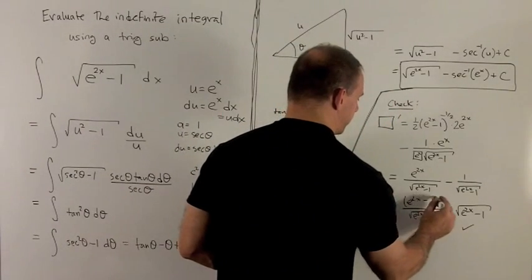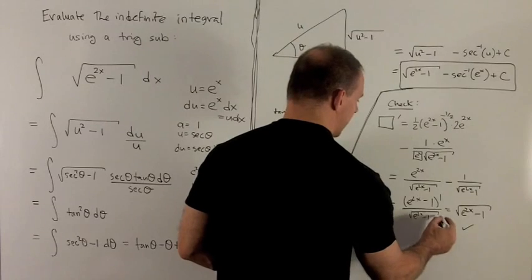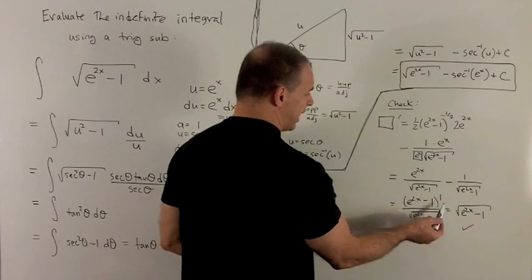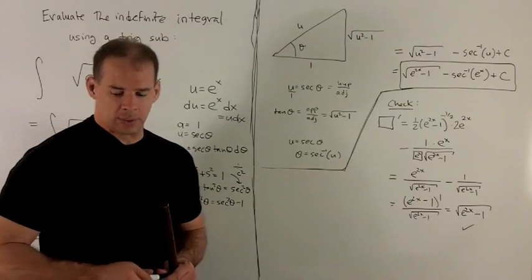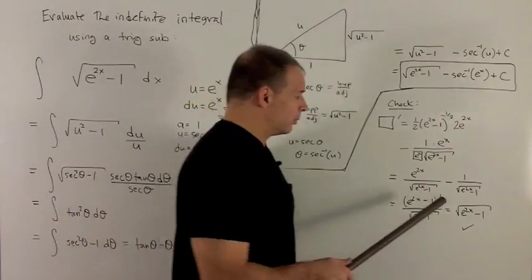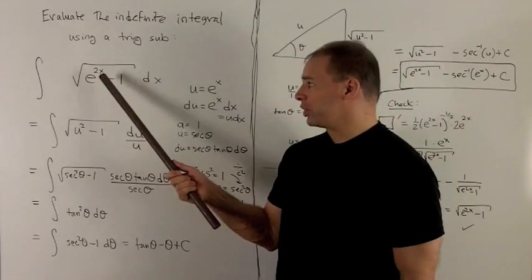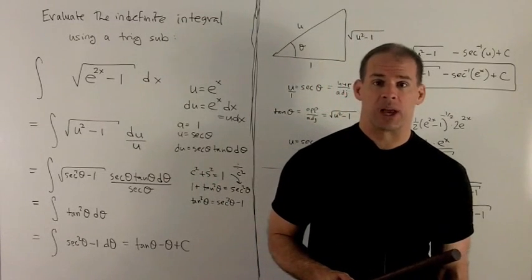Or you could think of this as being exponent 1, this is exponent 1. So I'm going to take a half off of the top, which leaves me with radical e to the 2x minus 1. And we note, this is good, this is our original integrand, so the check works out.